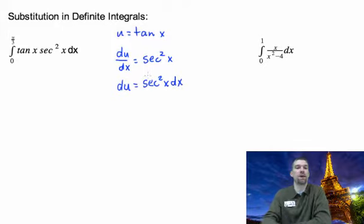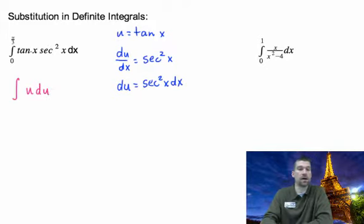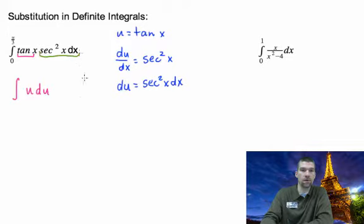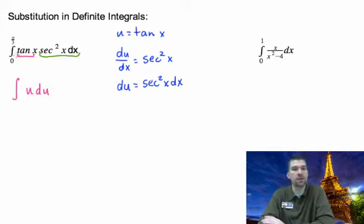All right, no problem, right? So my integral then becomes the integral of u du. How great is that? Here's u right here. Here's du right here. So all that sorts itself out really well. But what about my limits of integration? What do I do on that?